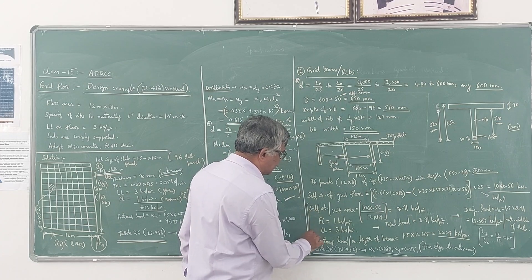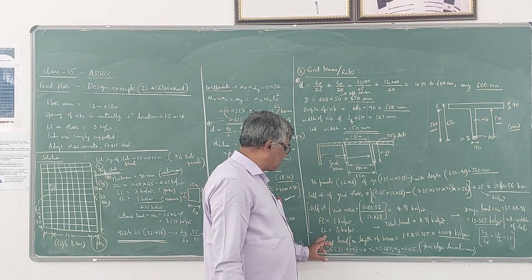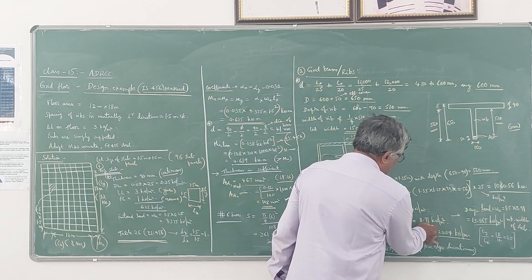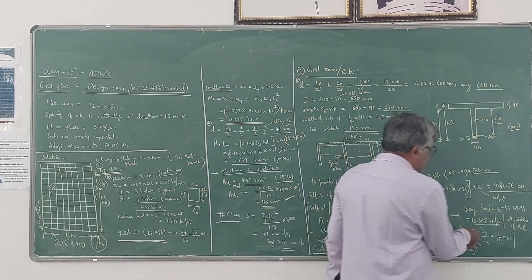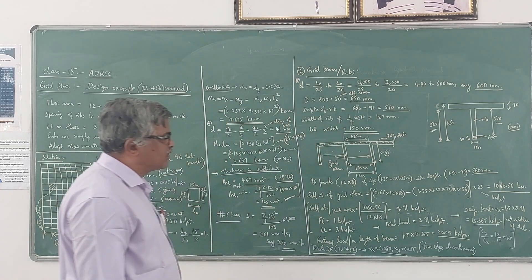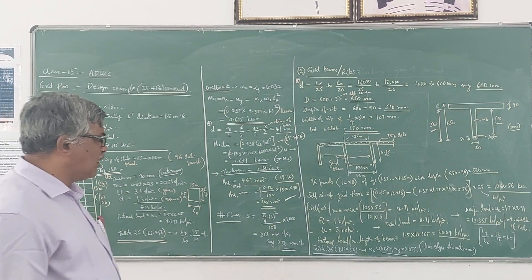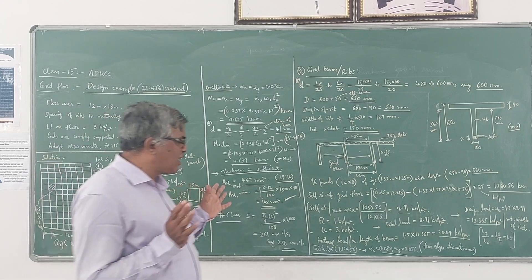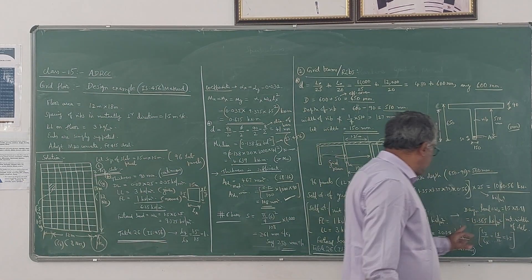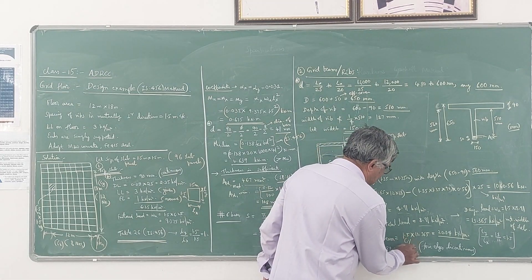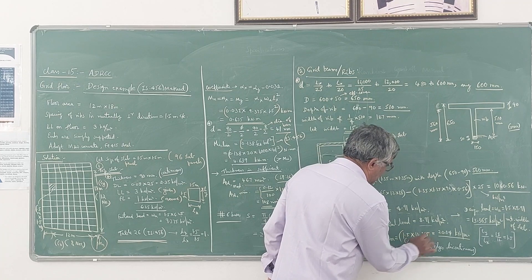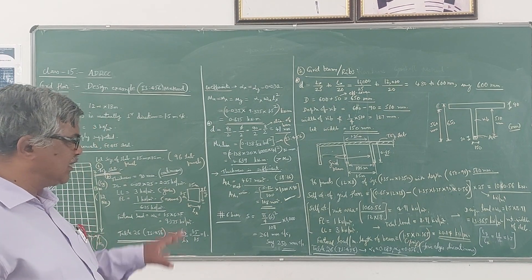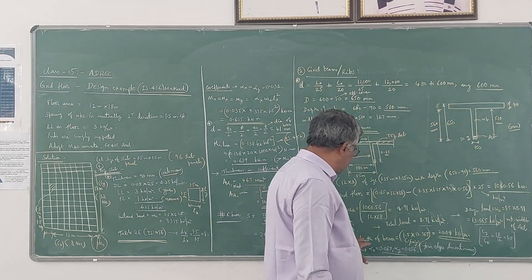Adding floor finish of 1 kN/m² and live load of 3 kN/m² to the self-weight of 4.91 kN/m² gives a total load of 8.91 kN/m². The design (factored) load = 1.5 × 8.91 = 13.365 kN/m². Since the beam spacing is 1.5 m, the factored UDL per metre length of beam = 13.365 × 1.5 = 20.04 kN/m.